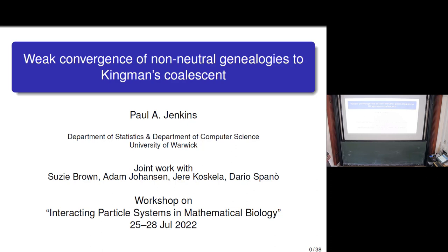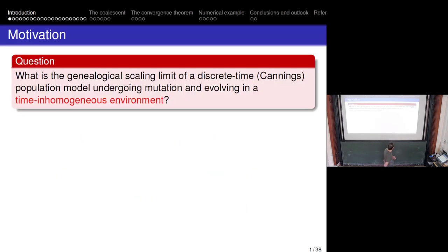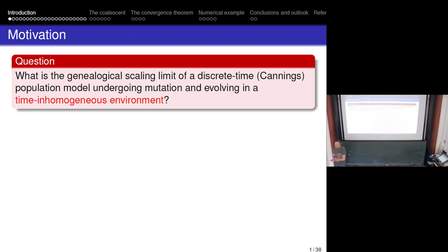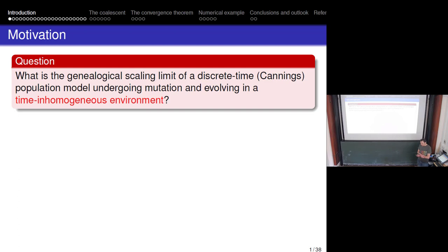I'm going to talk about weak convergence of non-neutral genealogies to Kingman's coalescent — and that's not a typo. So here is a motivating question phrased in a kind of mathematical biology language: what is the genealogical scaling limit of a discrete-time Canning's population model undergoing mutation and evolving in a time-inhomogeneous environment?